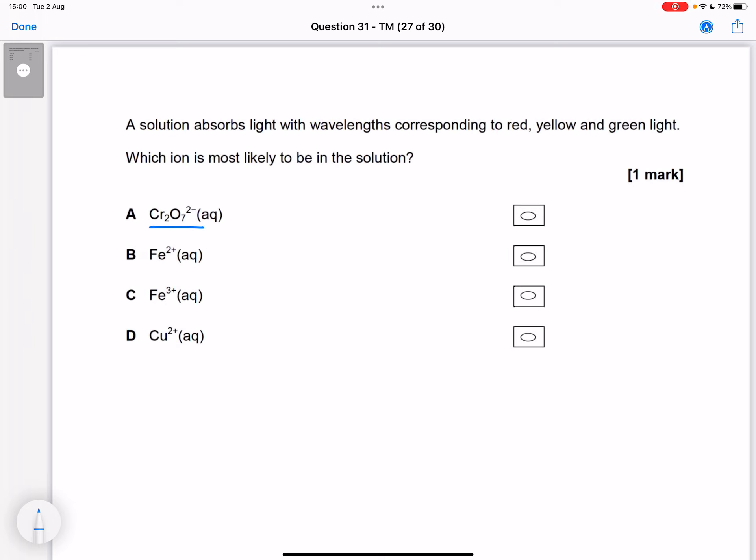So, dichromate, you're supposed to know that that's orange. Iron two, you need to know, is green. Iron three is orange, orangey-brown.